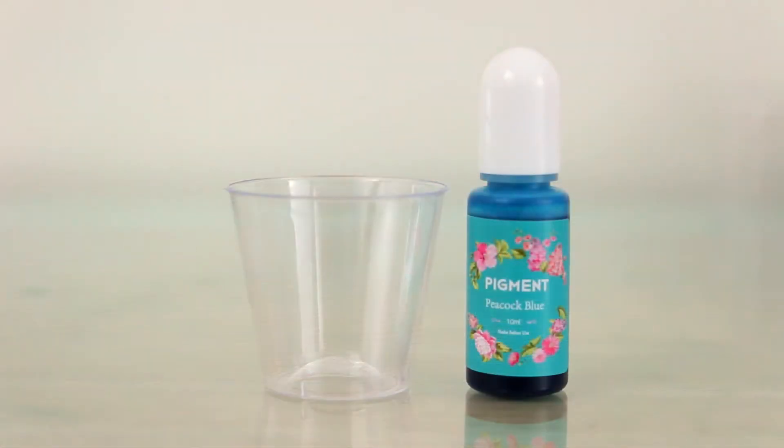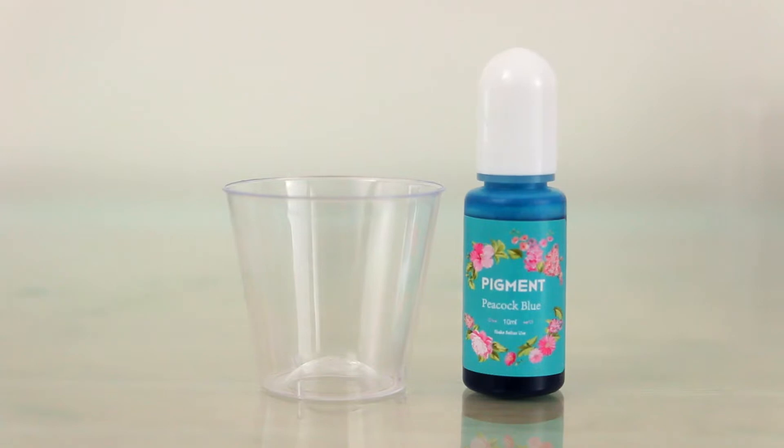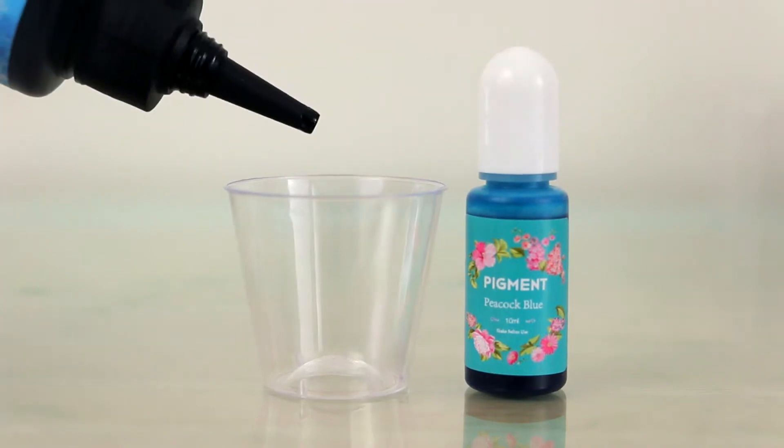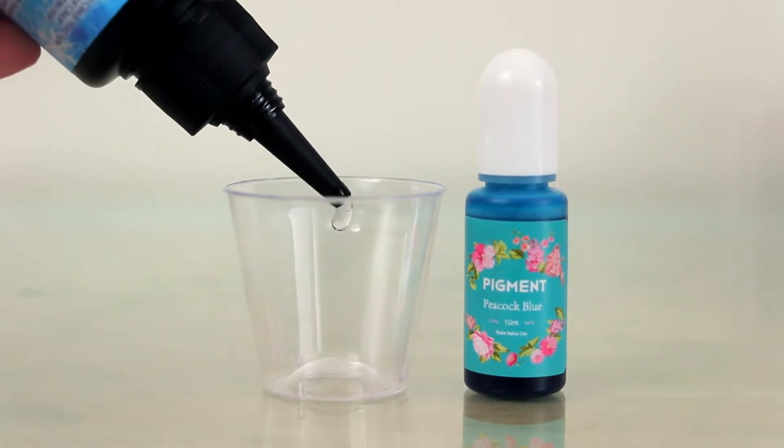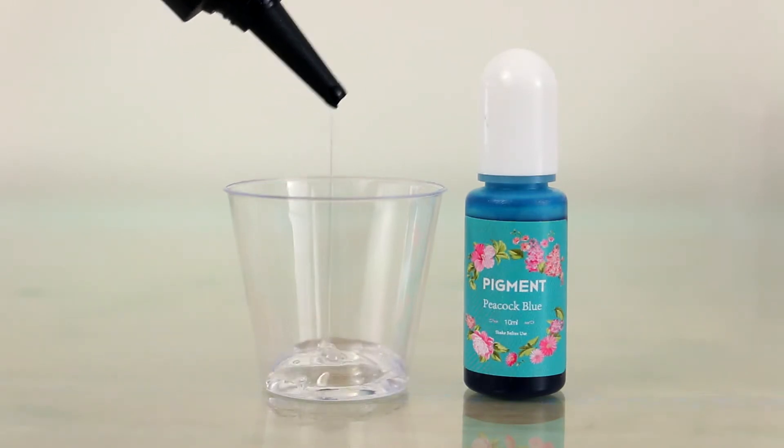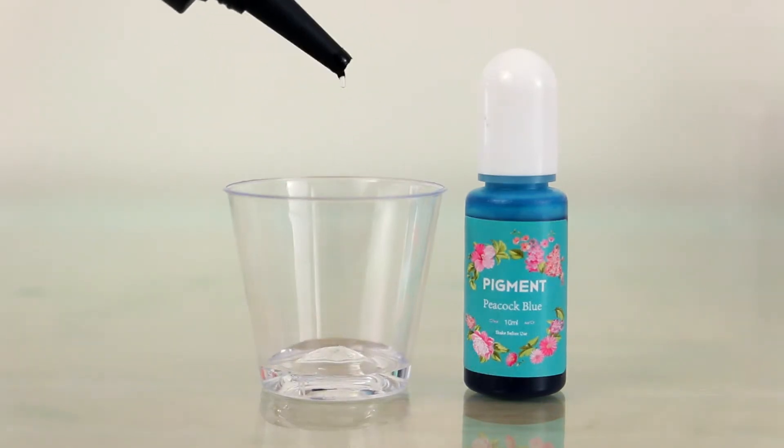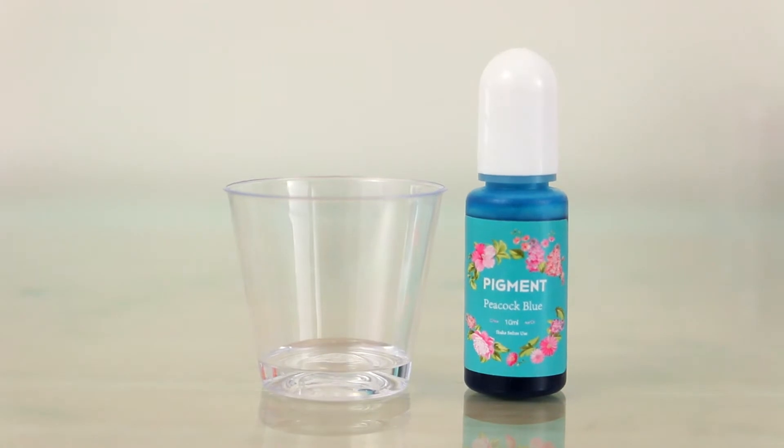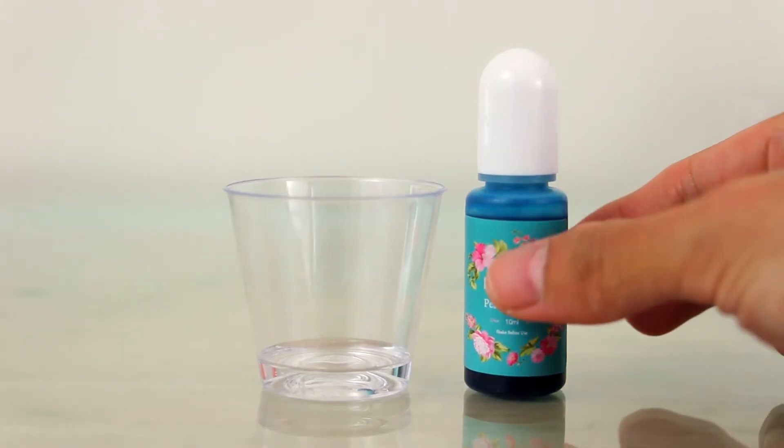So while that's baking, I'm gonna do some resin work. I have a plastic shot glass and some blue resin pigment. In the shot glass, I'm gonna pour in some UV resin and just to mention, this is the hard type of resin, not the soft, and it's also not the epoxy one either. And then a drop of the pigment.